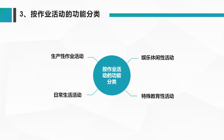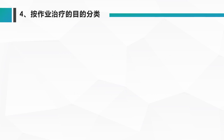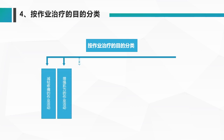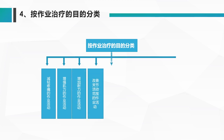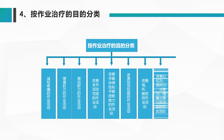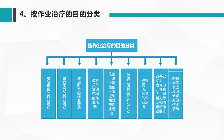按作业治疗目的分类，可分为：减轻疼痛的作业活动、增强肌力的作业活动、增加耐力的作业活动、改善关节活动范围的作业活动、改善手眼协调能力和平衡控制能力的作业活动、改善视觉、听觉、触觉的作业活动，以及改善记忆力、定向力、注意力、理解力等认知功能的作业活动。